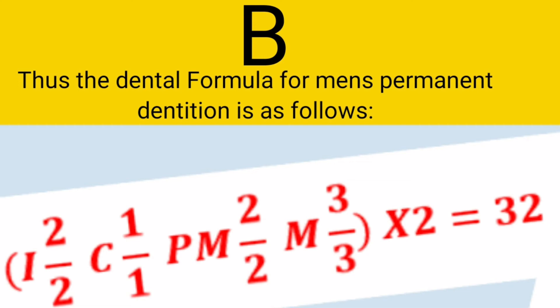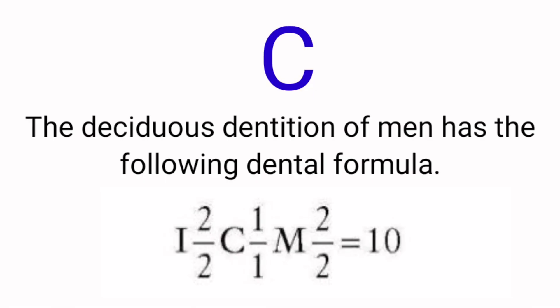The deciduous dentition of men has the following dental formula: I indicates the incisor, 2 upper and 2 lower; C indicates the canine, 1 upper and 1 lower; M indicates the molar, 2 upper and 2 lower. Premolars are absent in deciduous dentition.